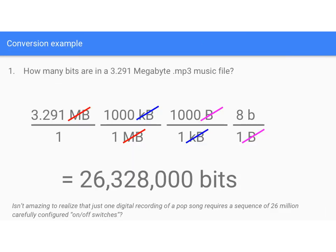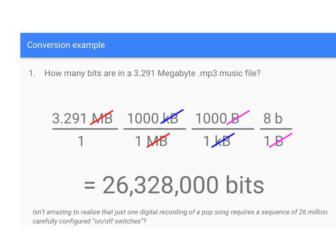The last thing I want to show you is a calculation you should know how to do — a conversion example. If someone asks how many bits are in a 3.291 megabyte music file, here's how you do it using dimensional analysis. You write 3.291 megabytes over one, then multiply by 1000 kilobytes per megabyte, then 1000 bytes per kilobyte, then 8 bits per byte.